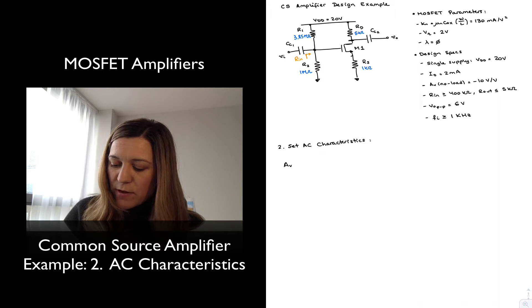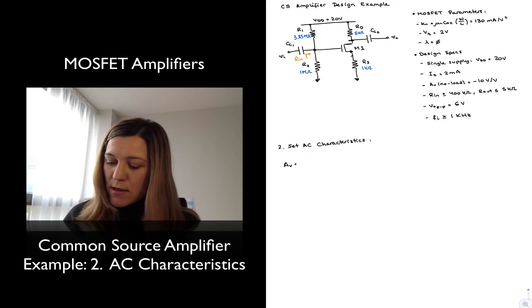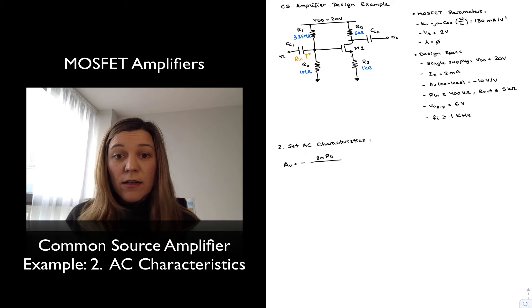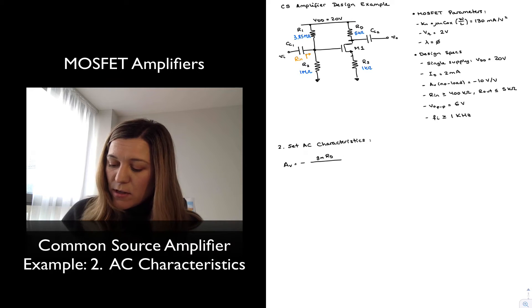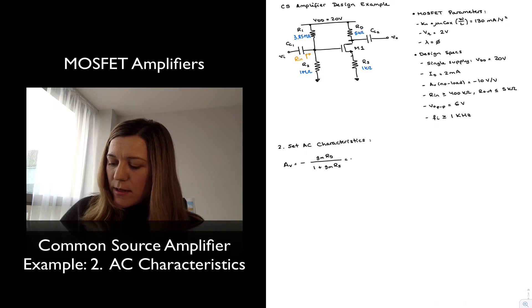First thing I have specific requirements for my voltage gain, input resistance, output resistance. My voltage gain is going to be equal to, since I have source degeneration, it's going to be negative GM times RD. Remember that this is an inverting type of amplifier divided by 1 plus GM times RS. I want the feedback. I want this gain to be negative 10.